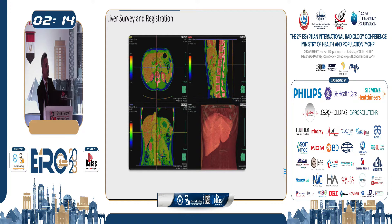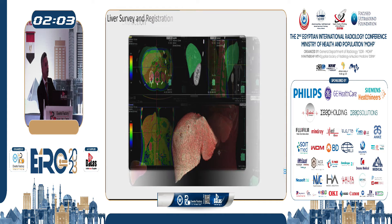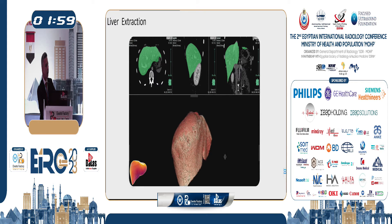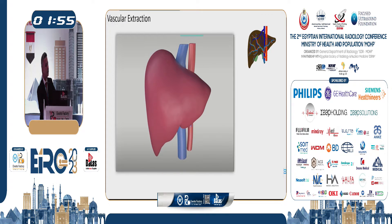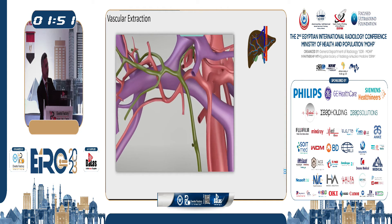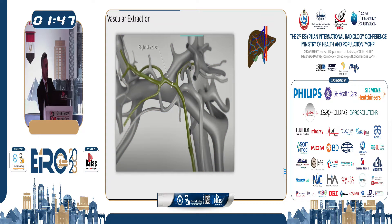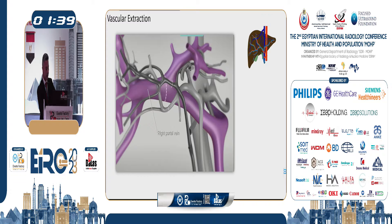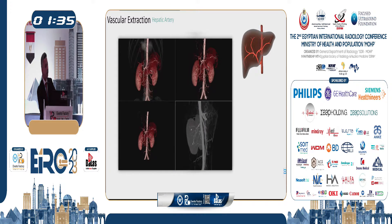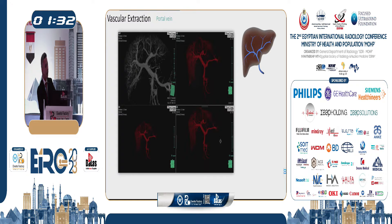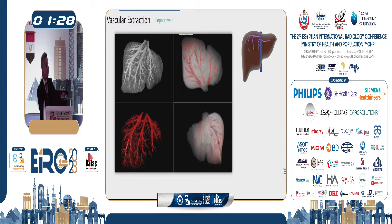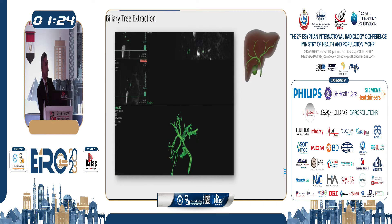Once a CT image is loaded, auto-registration occurs directly, and with one click — based on liver signal intensity and auto-labeling — the system performs complete liver extraction. For vascular extraction, Synapse 3D uses signal intensity differences to extract all liver vasculature including the hepatic artery, hepatic veins, portal vein, and all tributaries. With one click, the hepatic artery and portal vein are extracted. For hepatic veins, the system can also fuse MRI and CT images to extract biliary structures — a process that previously took a very long time with older workstations.